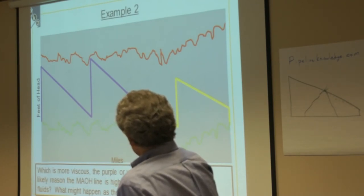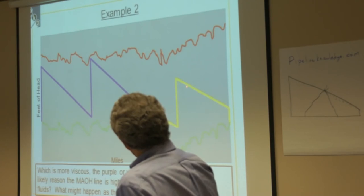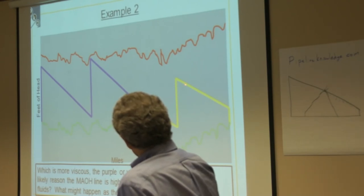Here's another example. Which is more viscous, the purple or the yellow? Why do you want to say yellow? Because of the slope. So this slope, is it more or less than that? The slope there looks like it's not as steep as the slope here. Yeah, so other way around.